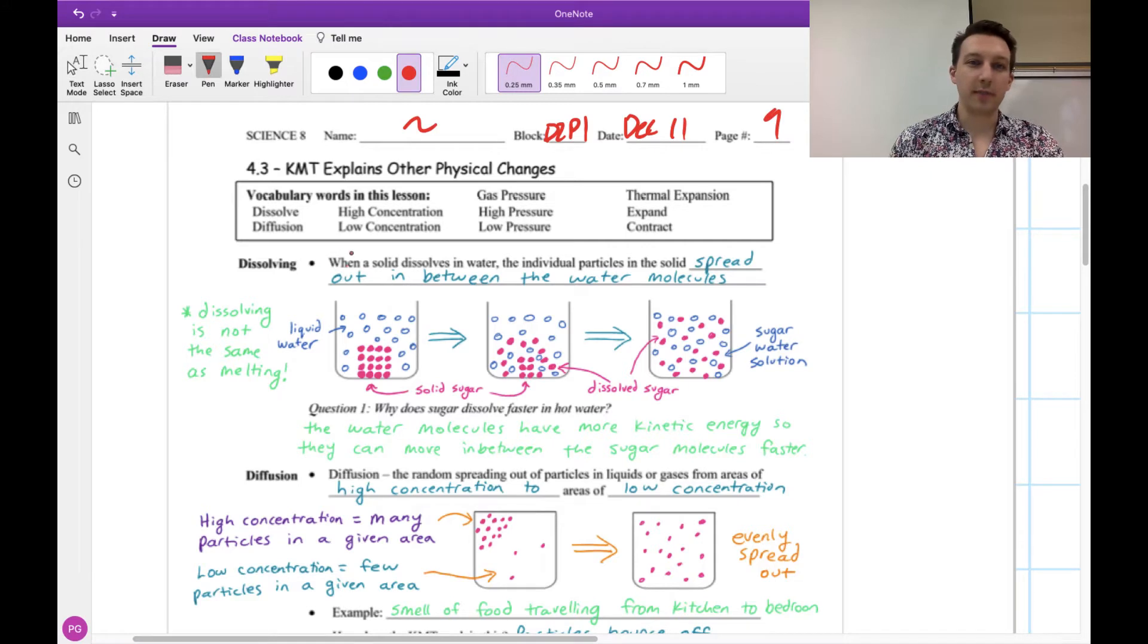The first thing we're gonna talk about is dissolving. So a solid dissolves in water, the individual particles spread out in between the water molecules. Maybe you've done this before if you've poured sugar into a hot drink, like coffee, or if you've ever done instant hot chocolate. You pour those powder packages, that dissolves into the water here.